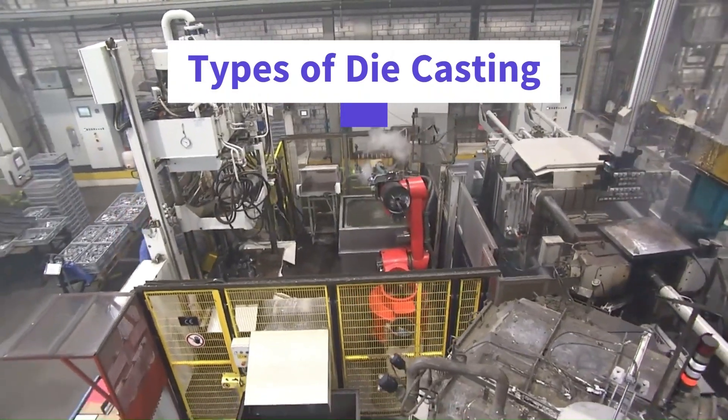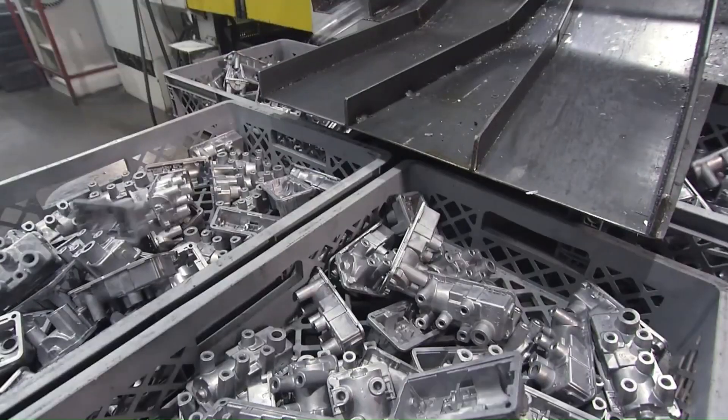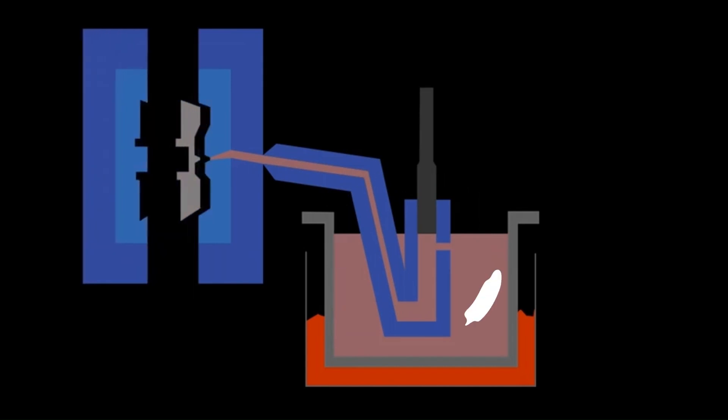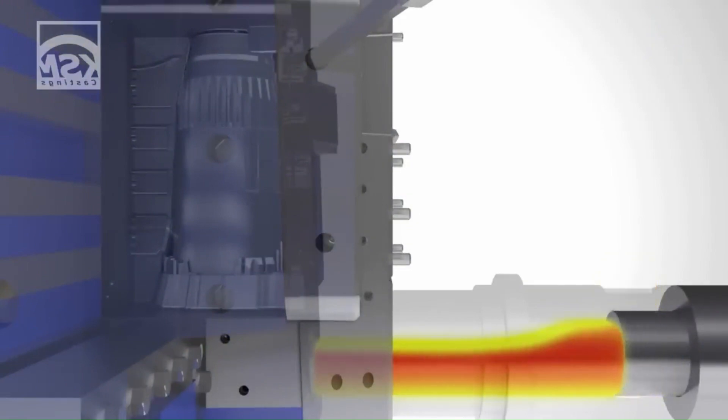There are different techniques in the die casting process: low-pressure die casting, hot-chamber high-pressure die casting, and cold-chamber high-pressure die casting. This video shows how these three techniques work.